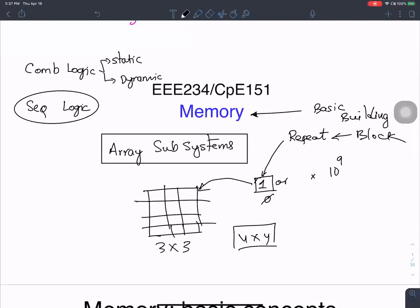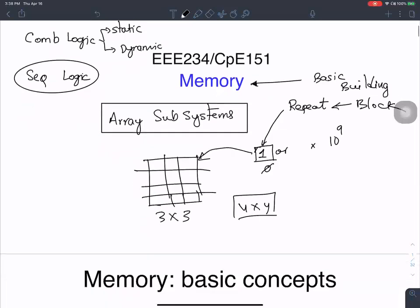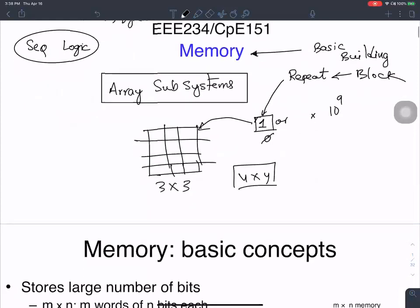The basic building block repeats itself over and over again in the form of an array to build a larger memory component. That's the reason why we call this array subsystems — there is an underlying array architecture.